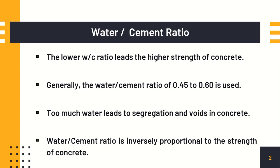The first factor is water cement ratio. Water cement ratio is the weight of water to the cement content, denoted as w/c. When we fix a water cement ratio of say 0.45, then w/c = 0.45, and from that we calculate w = 0.45 × c. Once you know the cement content, you can calculate the amount of water required to prepare that concrete mix.